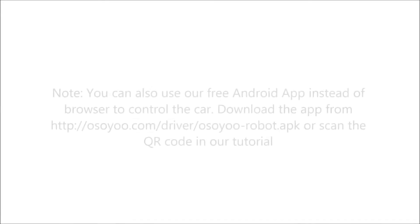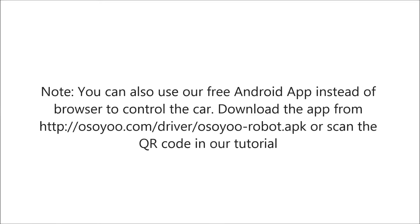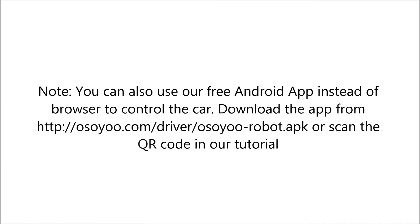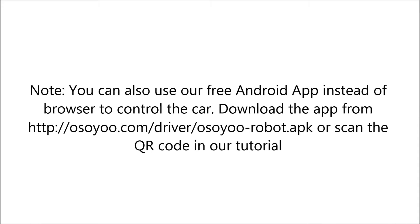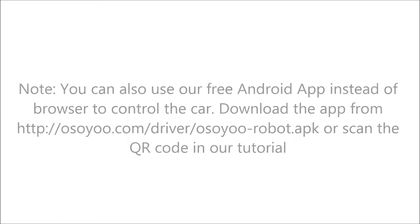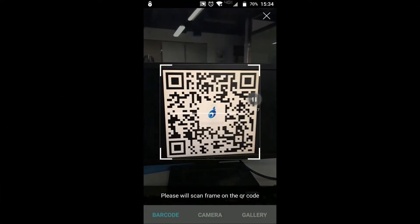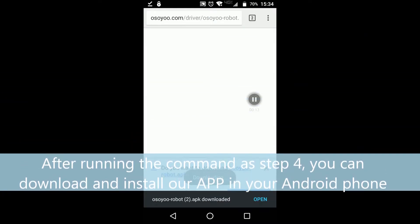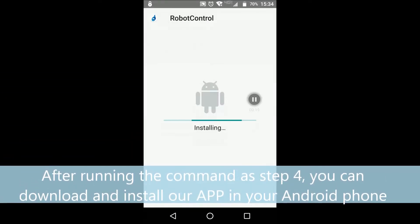You can also use the free Android app instead of a browser to control the car. Download the app from http://osiorobot.com/driver/osiorobot.apk or scan the QR code in the tutorial. After running the commands in Step 4, download and install the app on your Android phone.